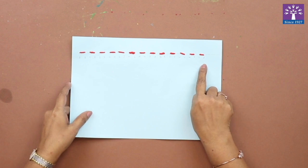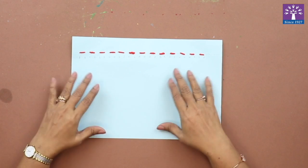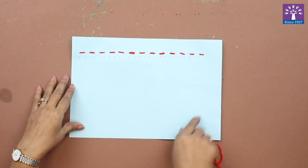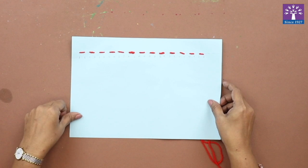So this is the running stitch. You have space here, you can draw more lines and practice more running stitch.